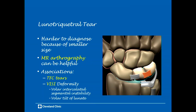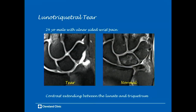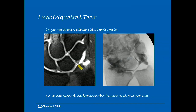Lunotriquetral tears are harder to diagnose than scapholunate tears, mainly due to the smaller size of the ligament, and MR arthrography can be especially helpful. These tears are often associated with TFC tears and can result in wrist instability — a VISI deformity, or volar intercalated segmental instability, where there is volar tilt of the lunate. Here's a 24-year-old male with ulnar-sided wrist pain showing a lunotriquetral tear on arthrogram, with contrast extending between the lunate and the triquetrum.